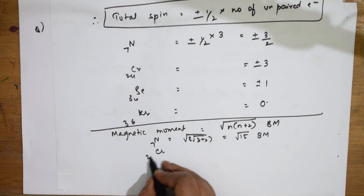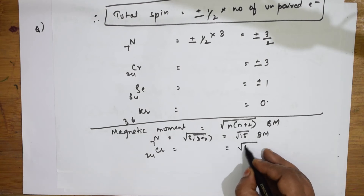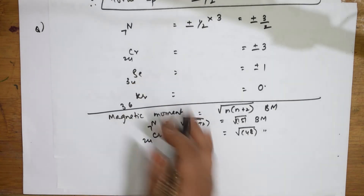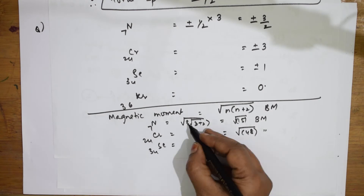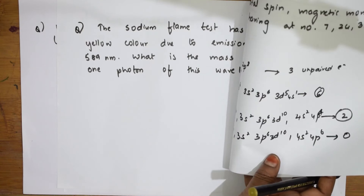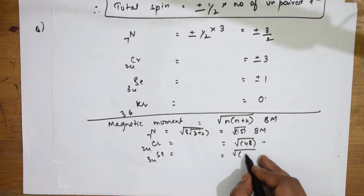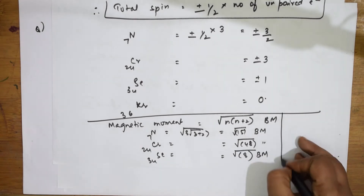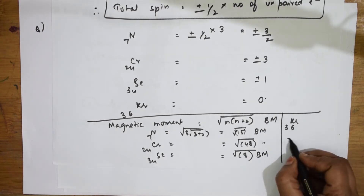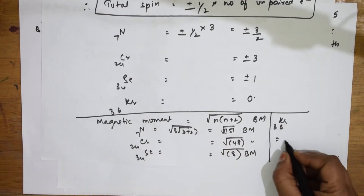For chromium (n=6): μ = √(6×8) = √48 Bohr magnetons. For selenium (n=2): μ = √(2×4) = √8 Bohr magnetons. For krypton (n=0): μ = 0. This is how you calculate both total spin and magnetic moment.